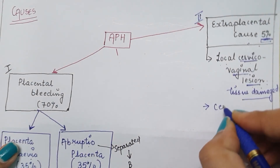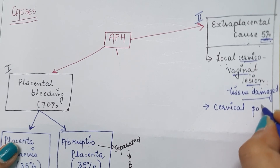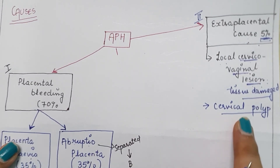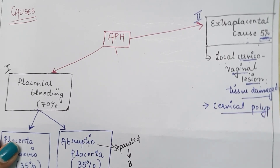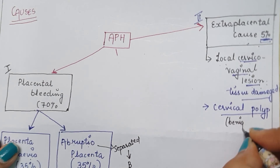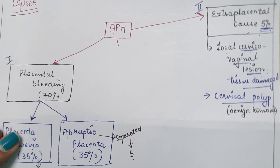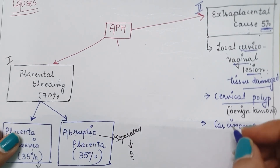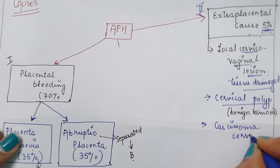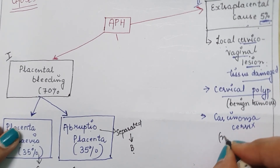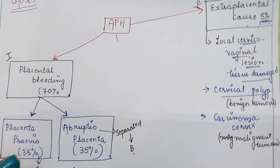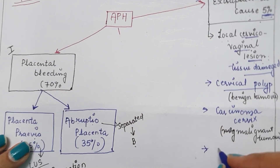Under extra-placental cause, the conditions include: first, cervical polyp, where a benign (non-cancerous) tumour forms at the cervical region. Second is carcinoma cervix, where a malignant (cancerous) tumour forms at the cervix.